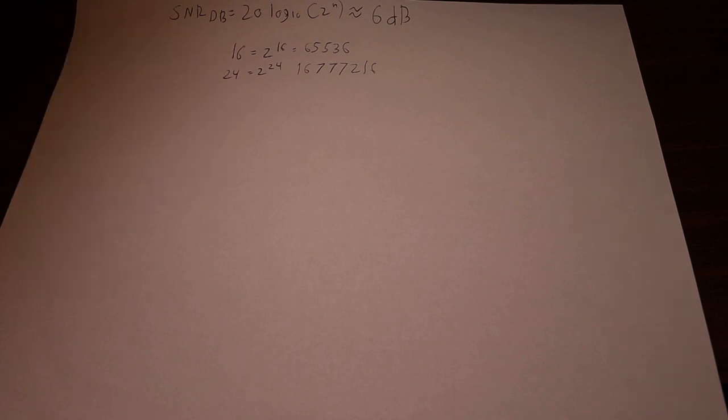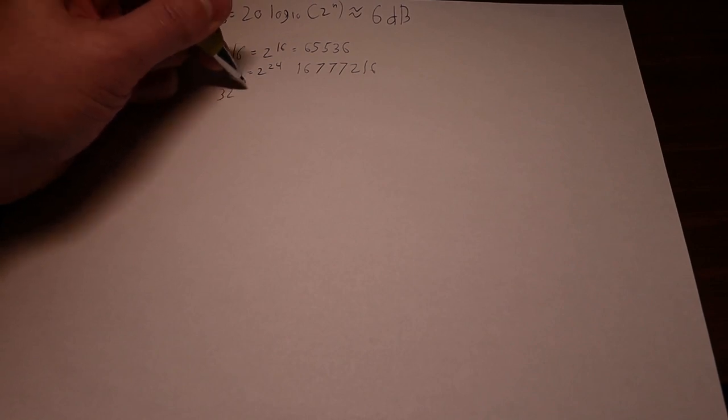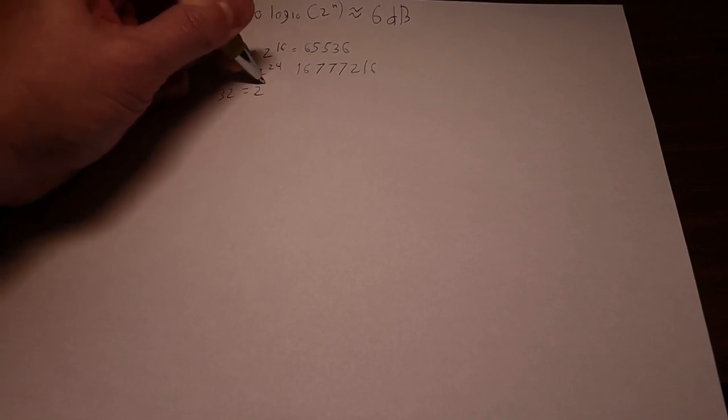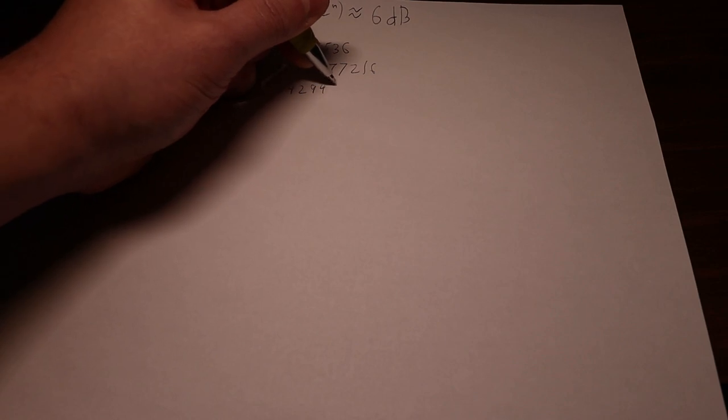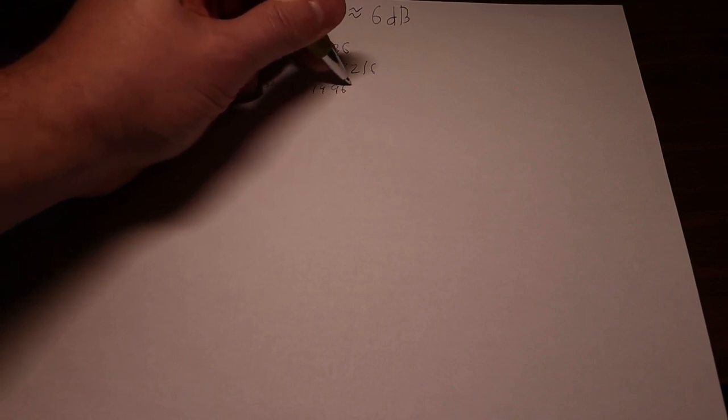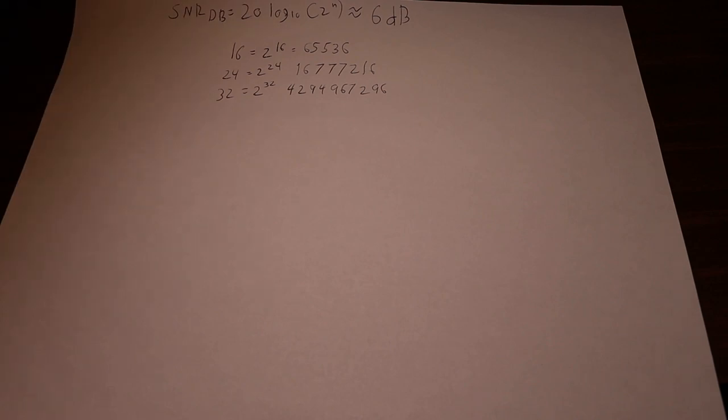Most modern high-end DACs actually calculate signal in 32 bits. So if we do the calculation there, 2 to the 32nd, this is 4,294,967,296 possible values.